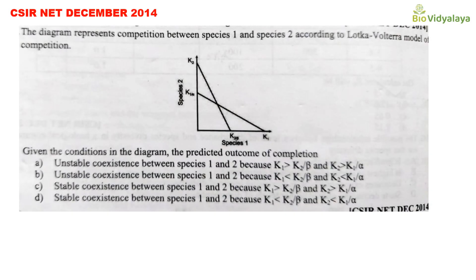Hello dear students, welcome to Bio with Yalea. Today in this lecture video we are going to discuss a couple of graphical questions based on the Lotka-Volterra competition model. This question is from CSIR Net December 2014. The diagram represents competition between species 1 and species 2 according to the Lotka-Volterra model of competition. Given the conditions in the diagram, we have to find the predicted outcome of competition.